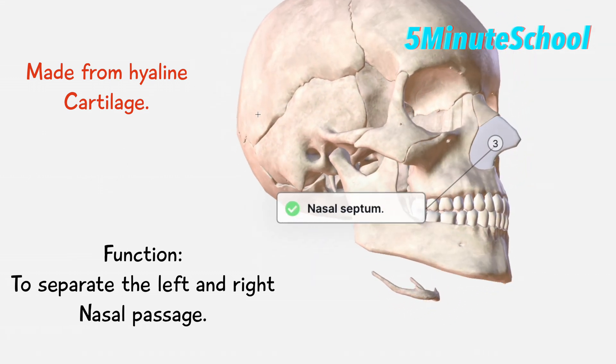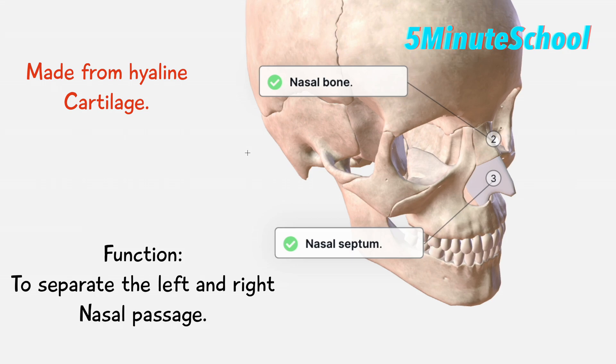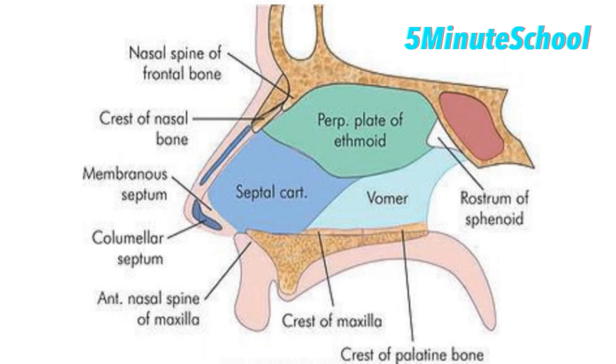Anteriorly we have the nasal bone, below is the maxilla and vomer, and then distally we have the perpendicular plate of the ethmoid bone.